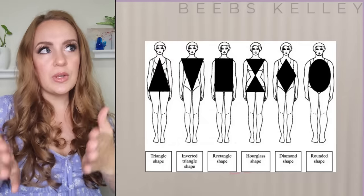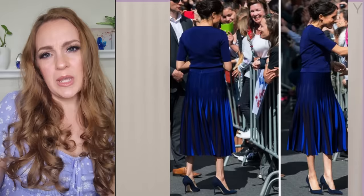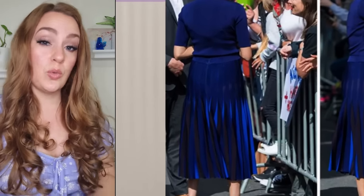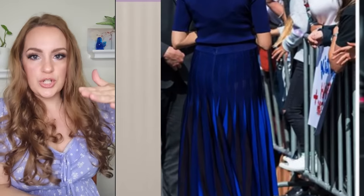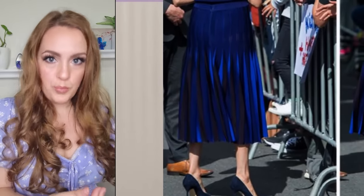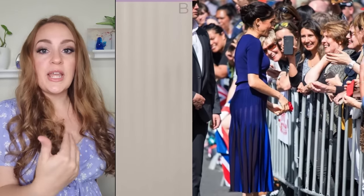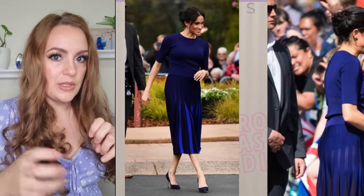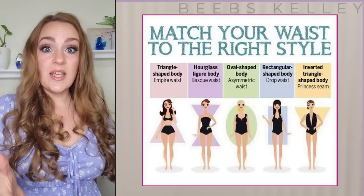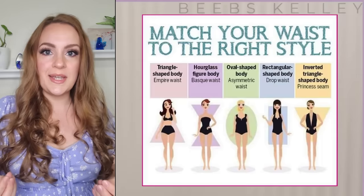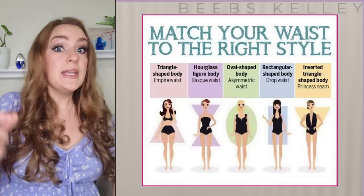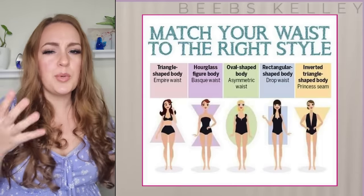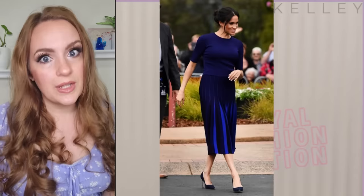For people who do have an hourglass figure or a defined waist naturally, you would generally place the waistline of your clothes near or on your natural waist. A big important piece in dressing is your proportions from your torso to your legs. If you have very long legs in proportion to your torso, you might want to place your waistline lower so that your torso looks a little bit longer and your legs don't look out of proportion.